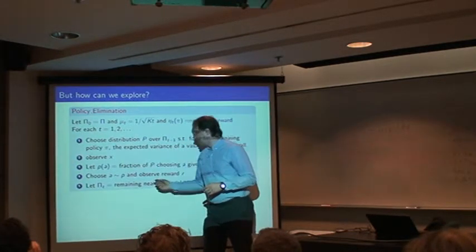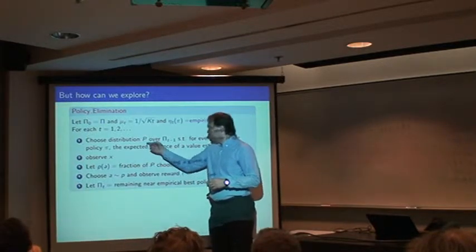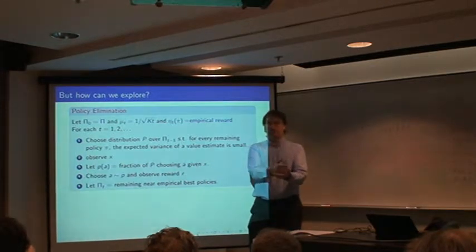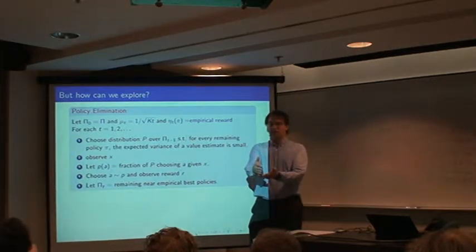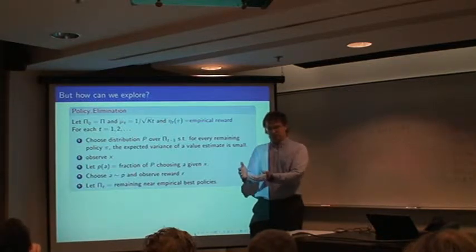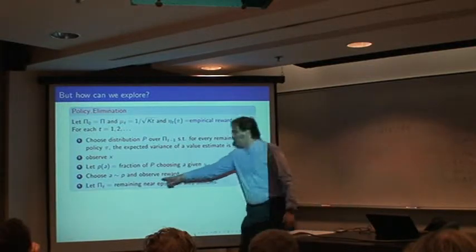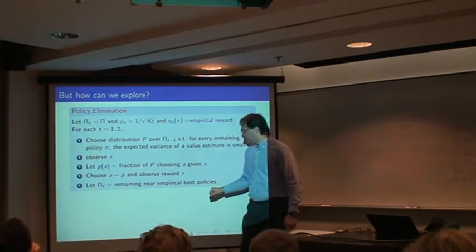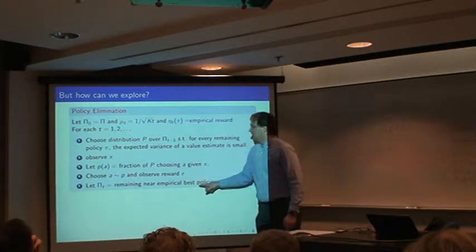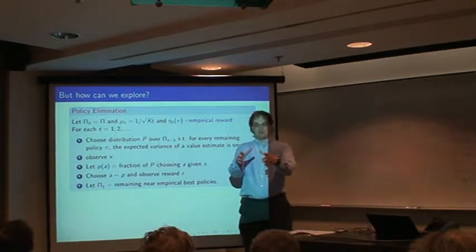You observe your features. You project the distribution on policies to be a distribution on actions. So if you draw a random policy and evaluate against the features, you get an action. So a distribution on policies induces a distribution on actions. And then you draw your action, you get your reward, and then you can use bounds to reduce the set of policies over time.